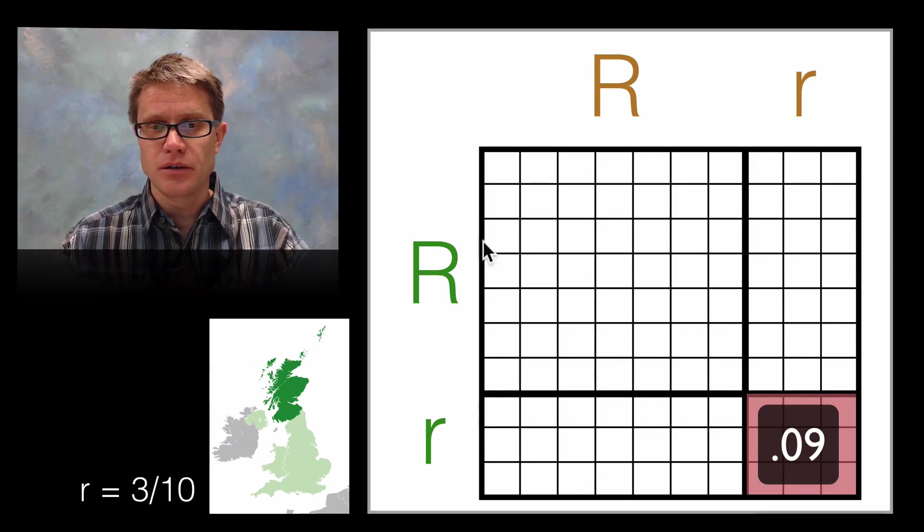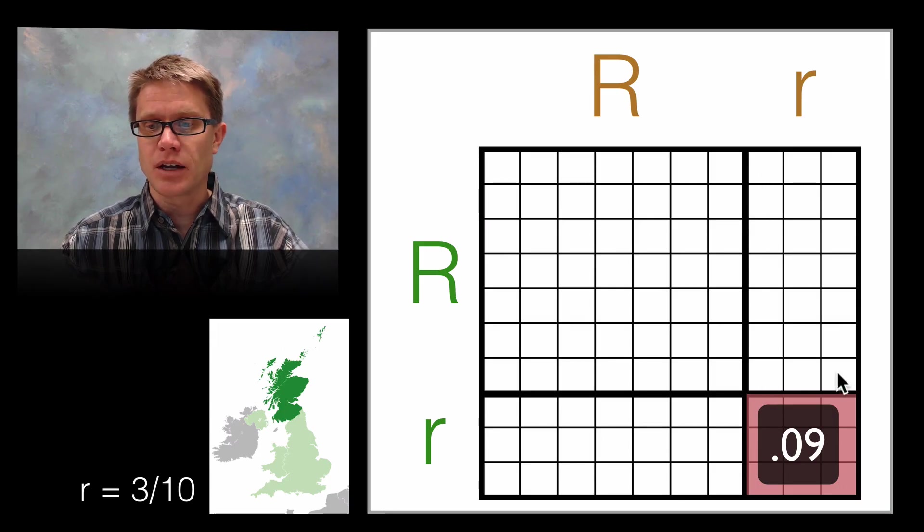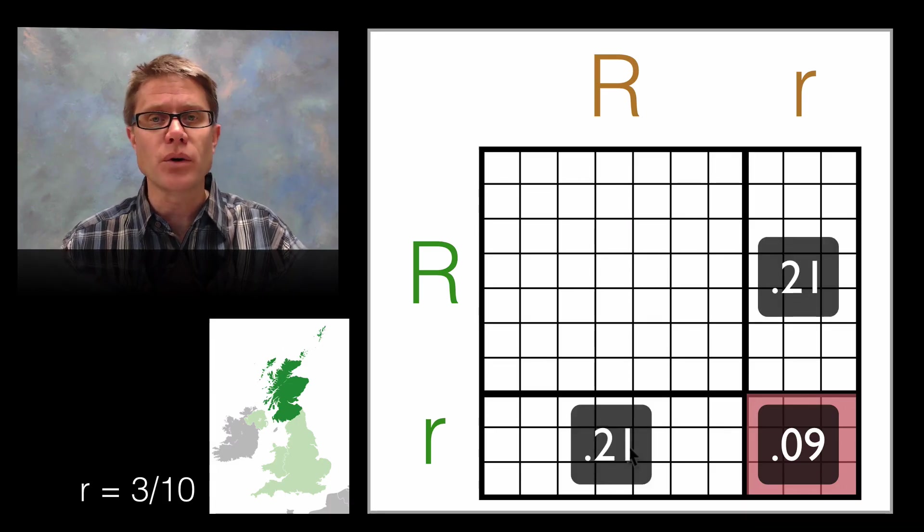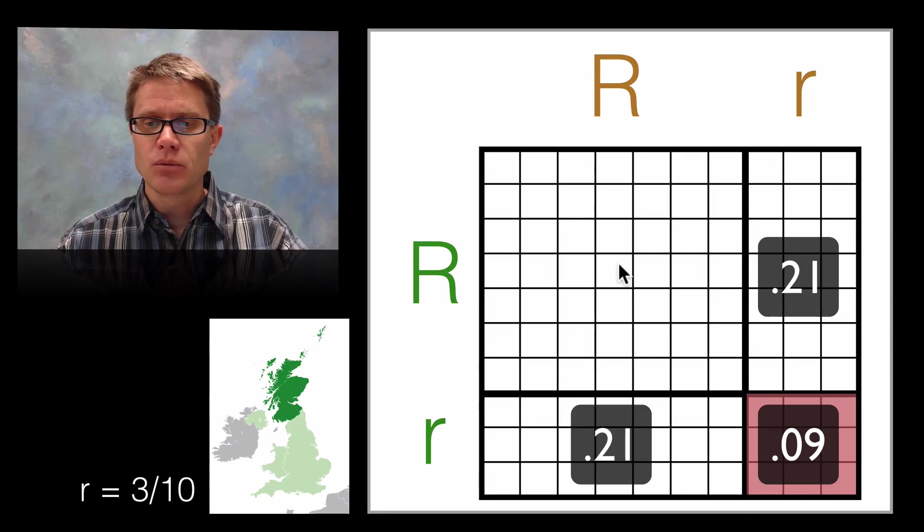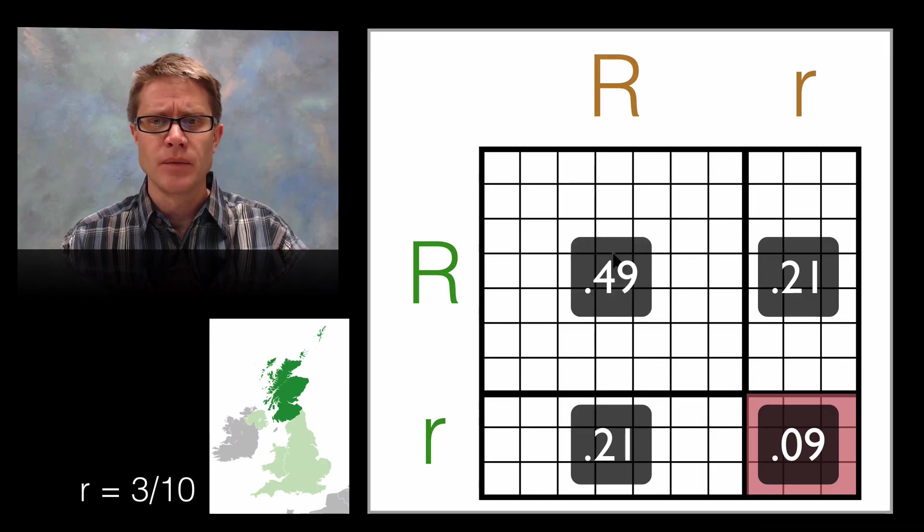Well how many people are heterozygous for example? Those would be in this box right here. They get the big R and the little r. Or they'd be in this box right here. So I could just count that up as well. So that's going to be 7 times 3 which would be 21 right here. 21 over here. So there would be a 42 percent probability that you're going to be heterozygous for the trait. And what about homozygous dominant? You just count all these boxes. So it's going to be 7 by 7. And so there would be 49 percent.